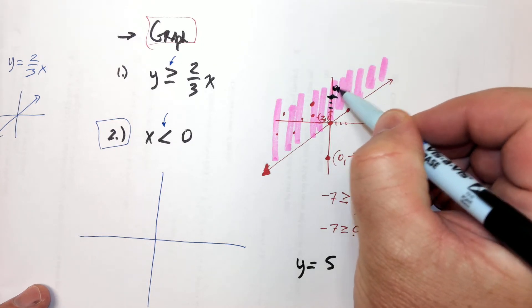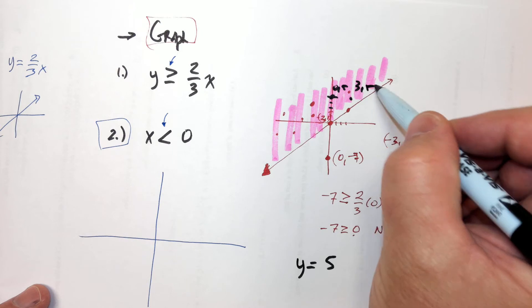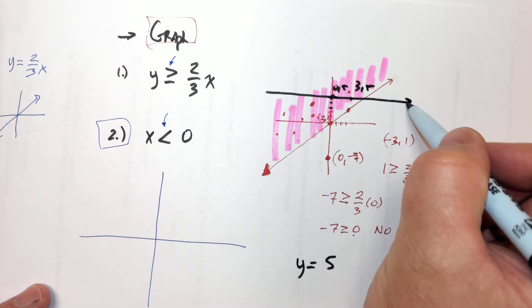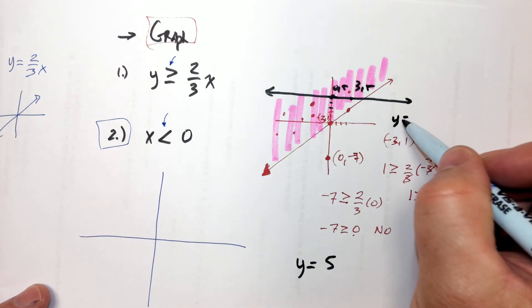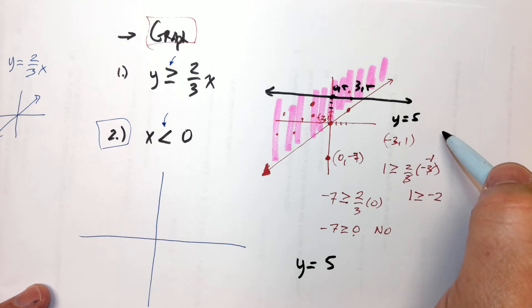That's vertical. Yeah, so zero, five. Let's say that's three, five. Remember, y equals a number is going to be horizontal. Yeah.